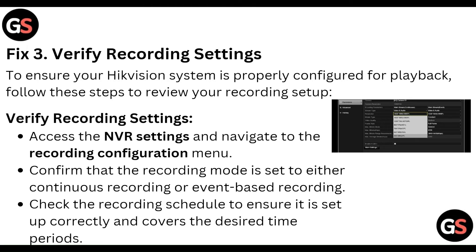Finally, verify the recording settings. Ensure your acquisition system is properly configured for playback. Access the NVR settings and navigate to the recording configuration window. Confirm that the recording mode is set to either continuous recording or event-based recording. Check the recording schedule to ensure it is set up correctly to cover the desired time and video.